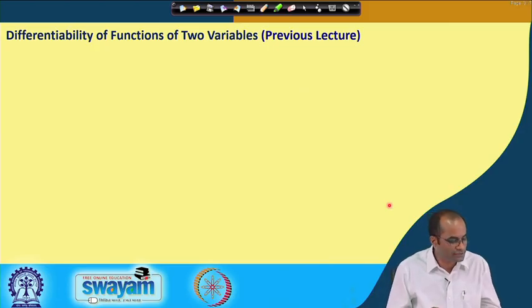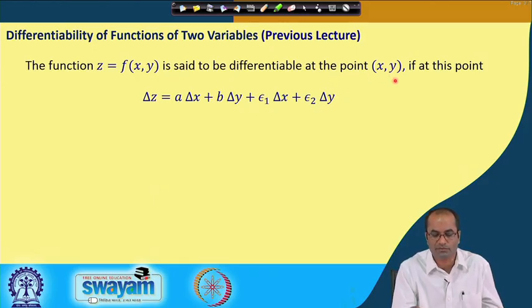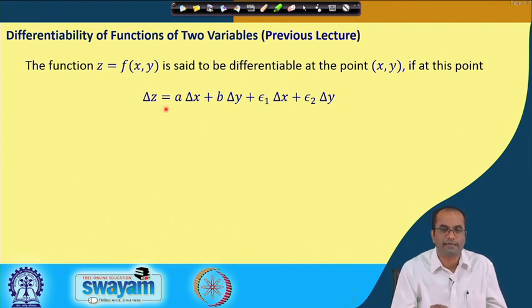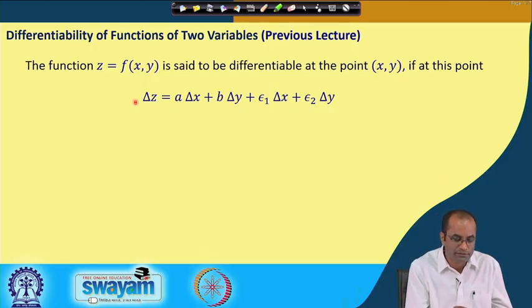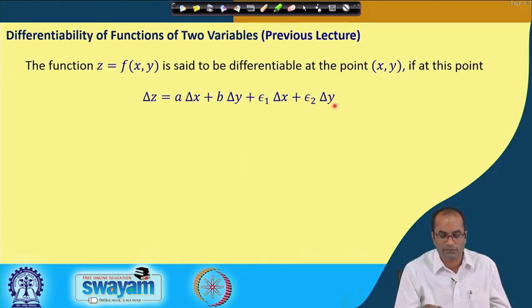To recall from the previous lecture, we discussed differentiability of functions of two variables. A function z is said to be differentiable at a point (x, y) if we can express δz — the variation in z when we vary x by δx and y by δy — in terms of δx and δy as: a·δx + b·δy, where a and b are independent of δx and δy, plus ε₁·δx + ε₂·δy, where ε₁ and ε₂ must go to 0 as δx and δy go to 0.